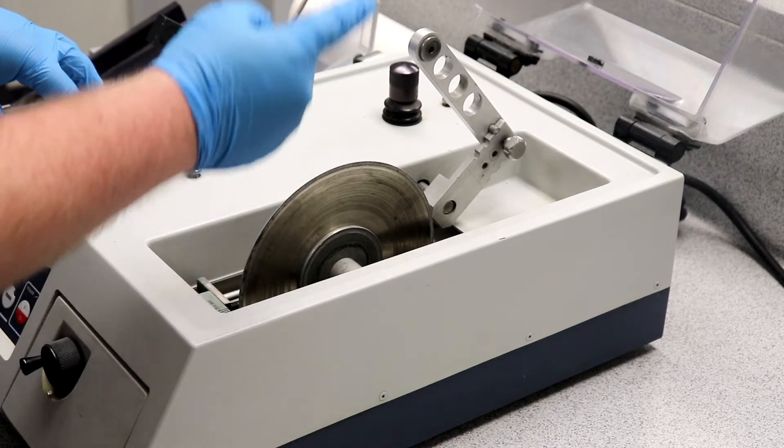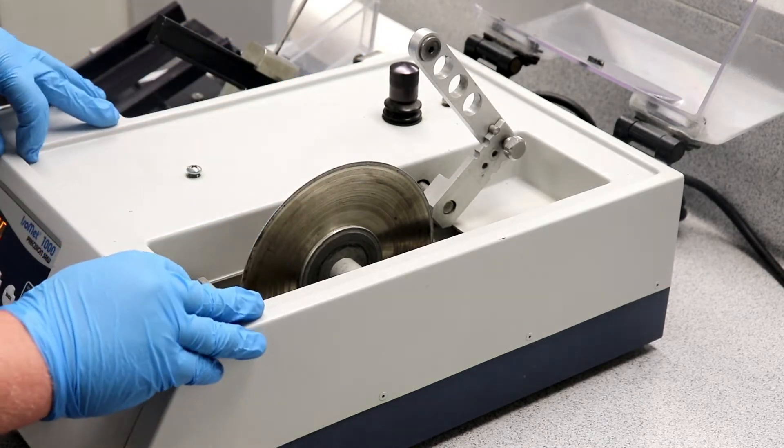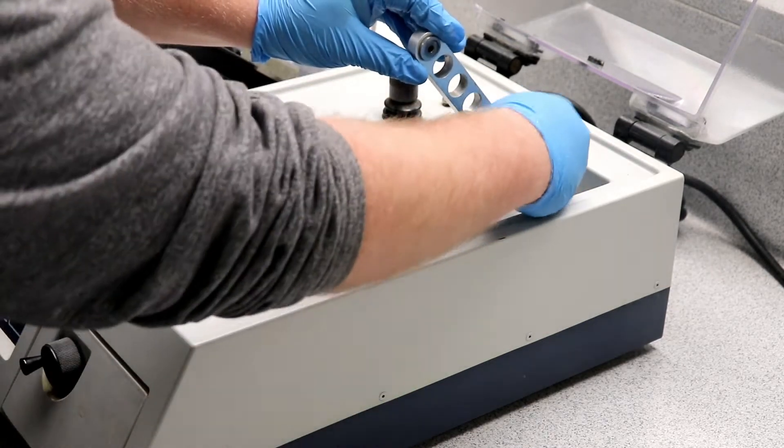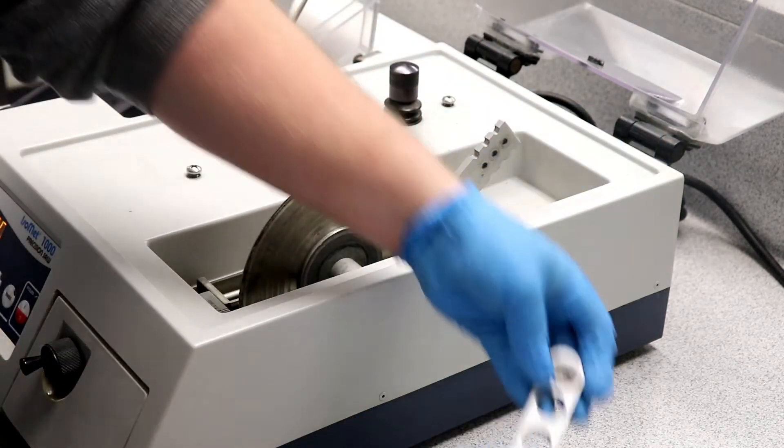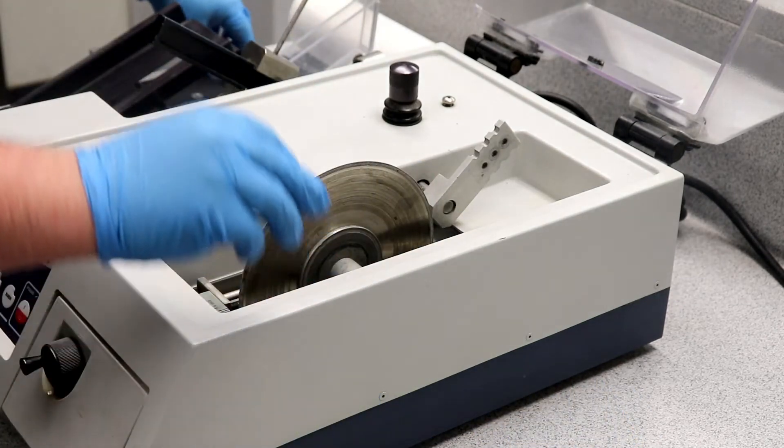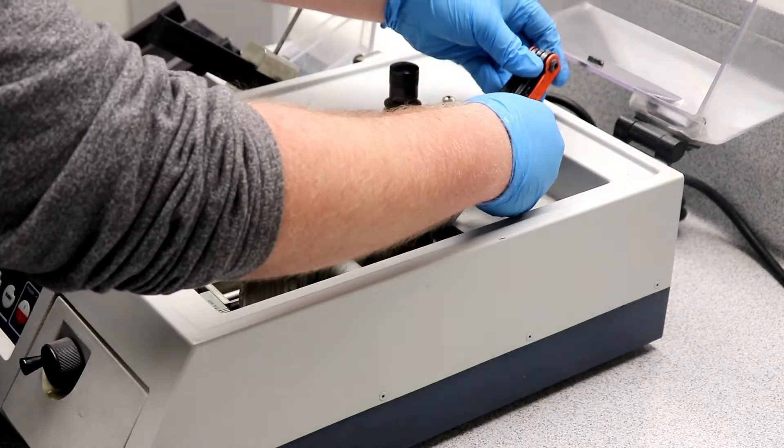But what we're going to do is disassemble the gravity fed sample holder. Take this off, loosen the set screw here holding it in place.